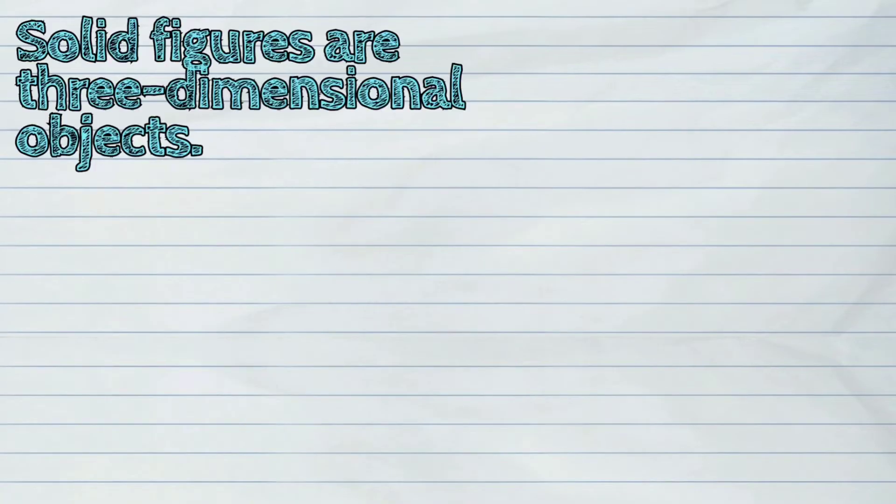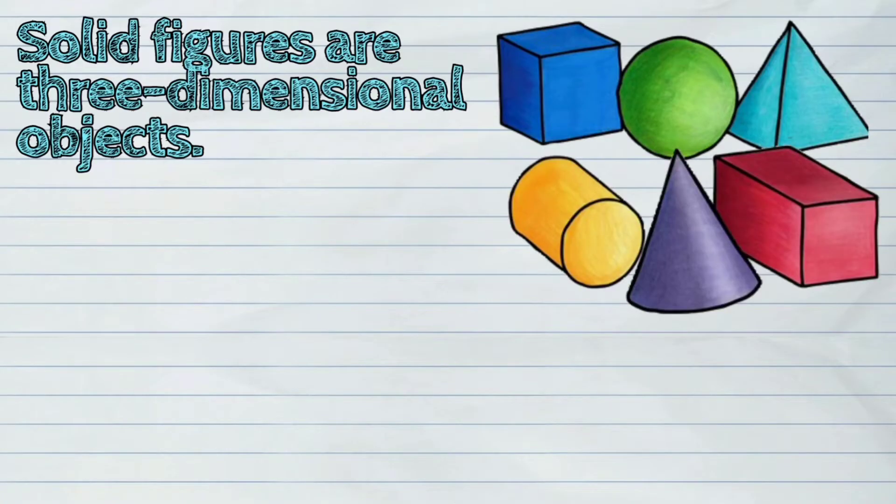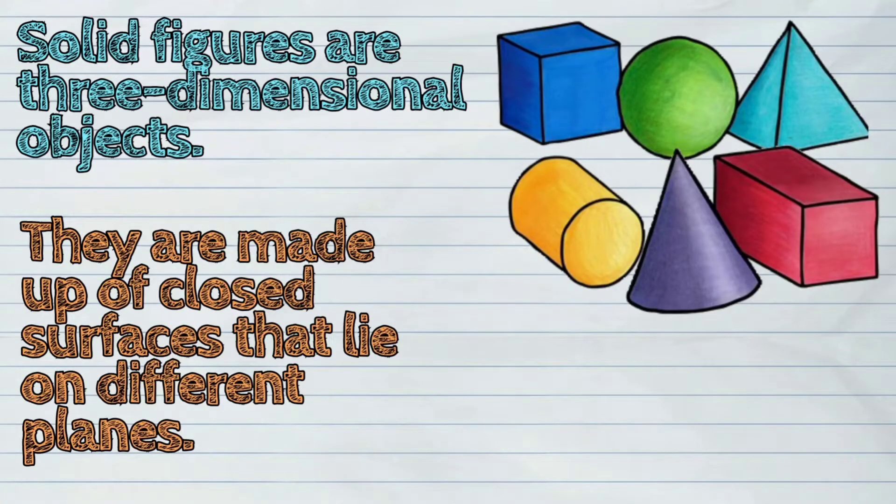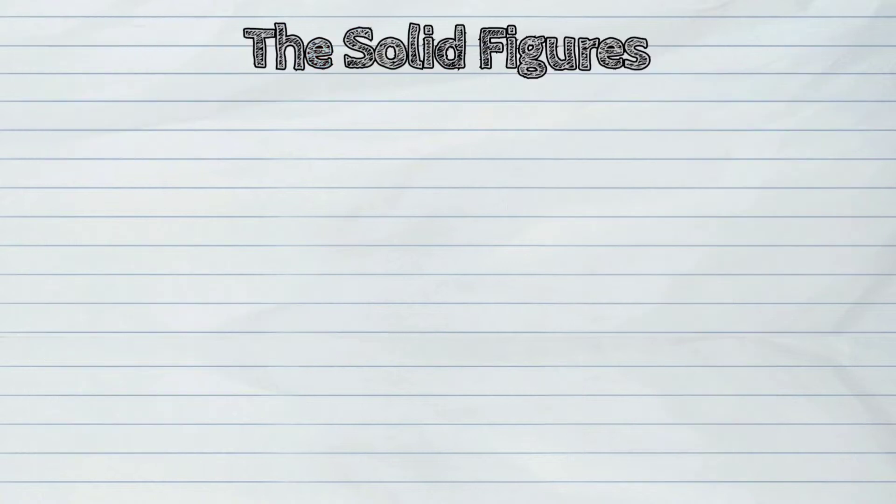Solid figures are three-dimensional objects. They are made up of closed surfaces that lie on different planes. Let us study the characteristics of some solid figures.